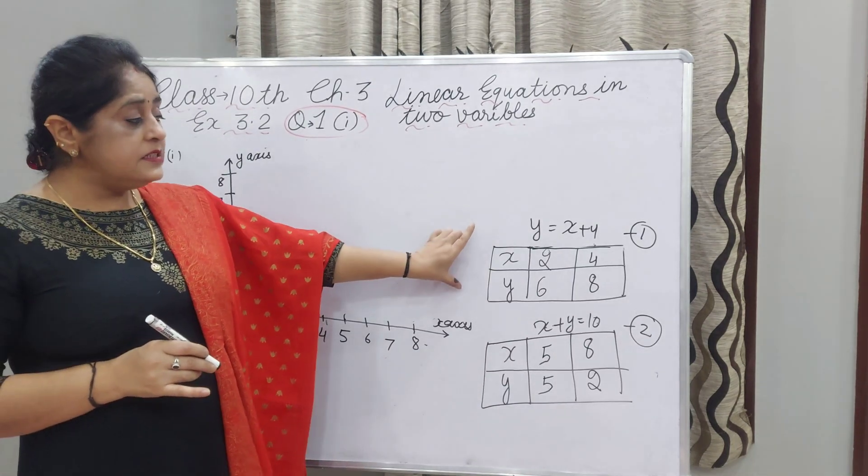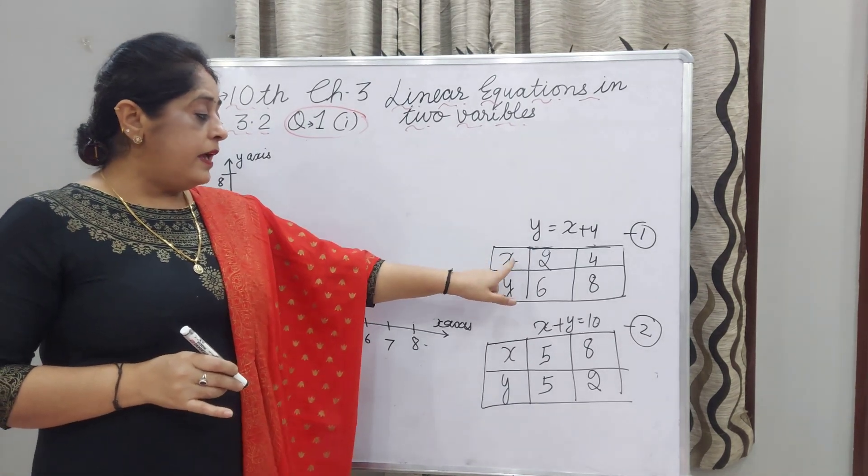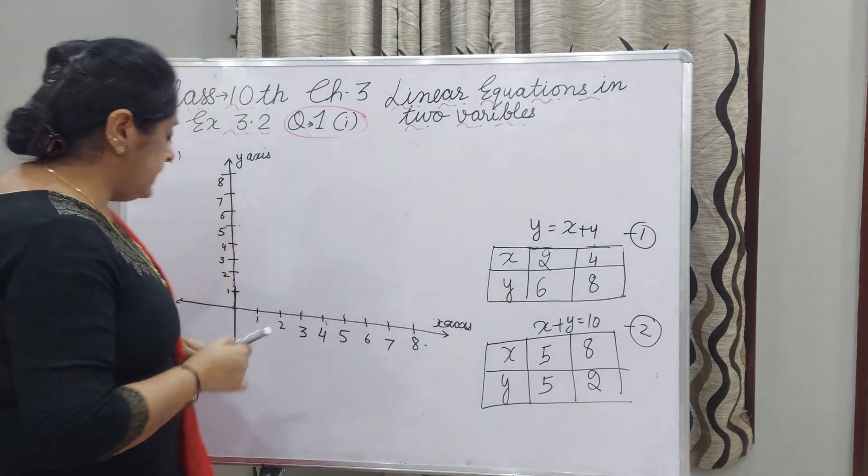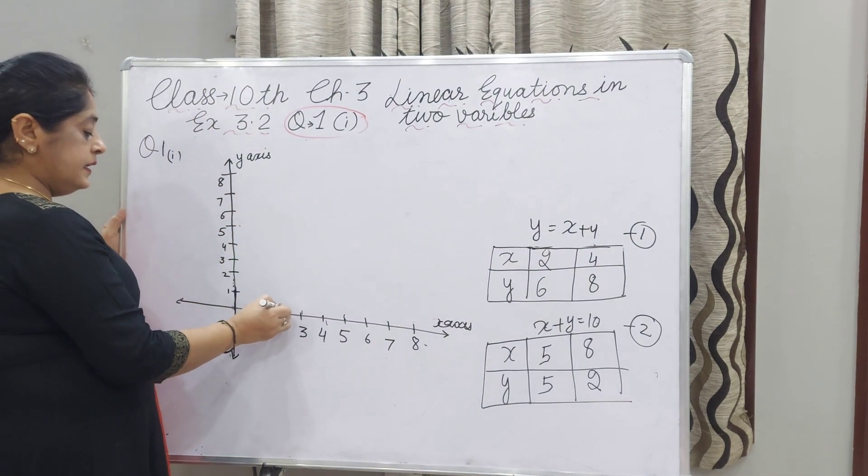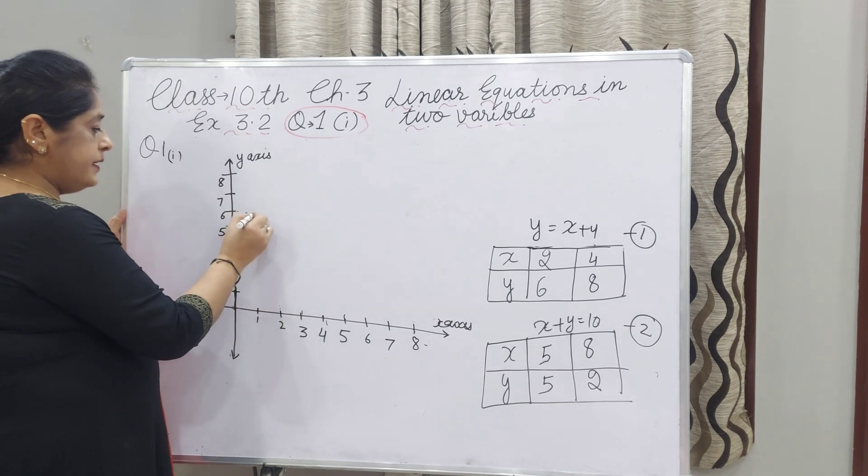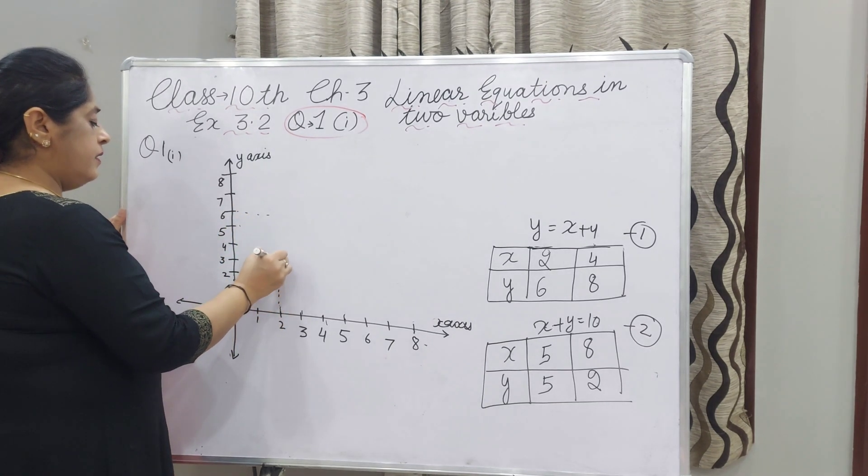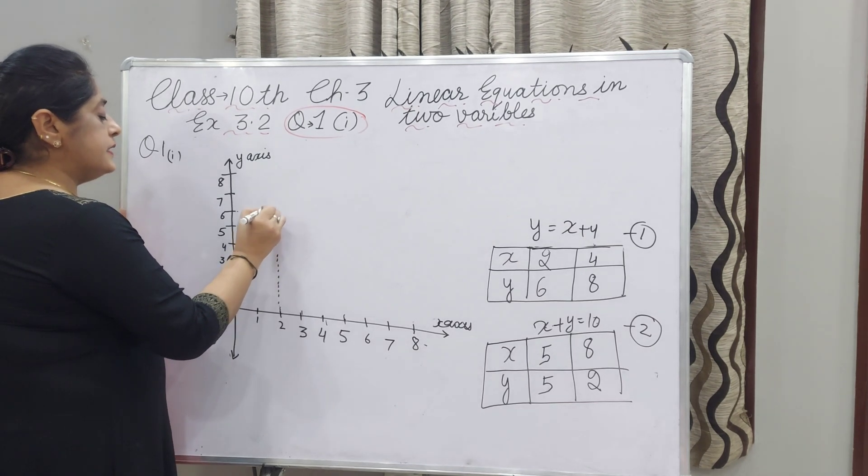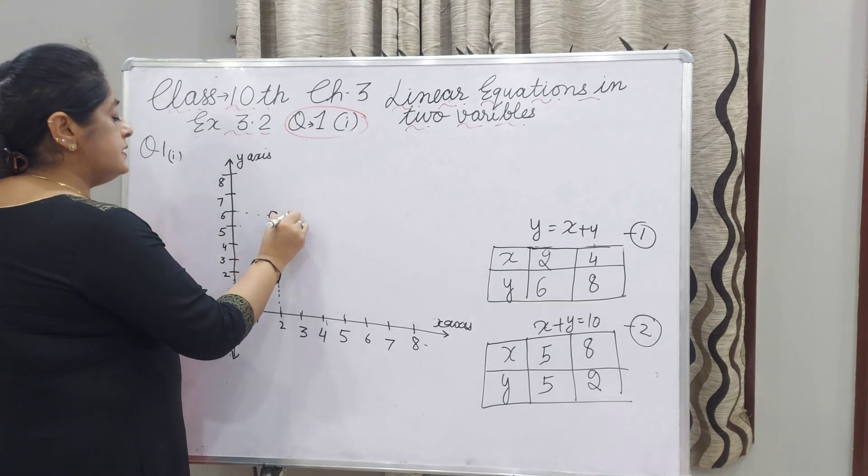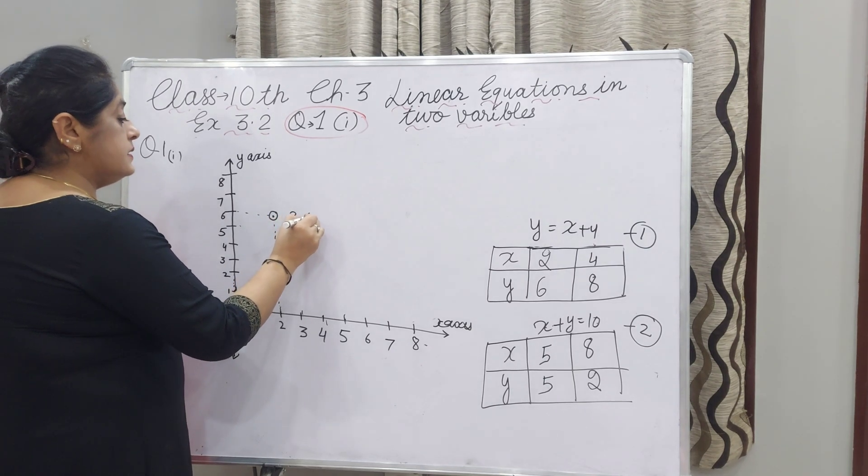First, I am taking the first equation. X is 2 and Y is 6. These two lines are perpendicular to each other. I get this point where X is 2 and Y is 6.